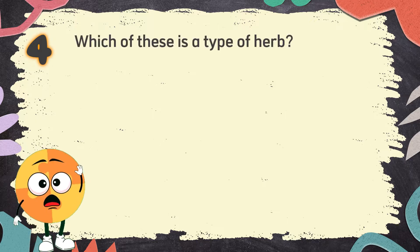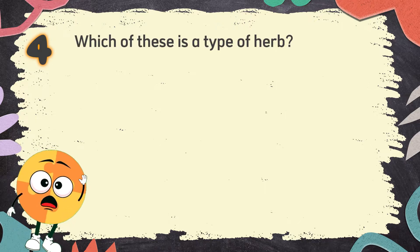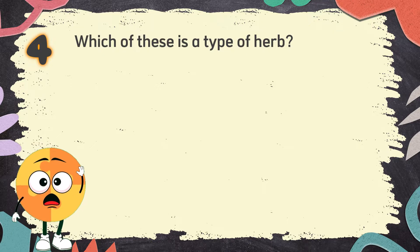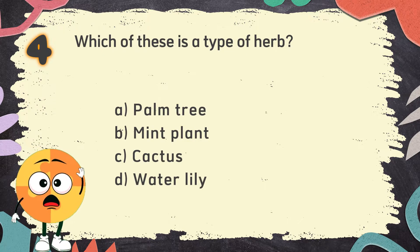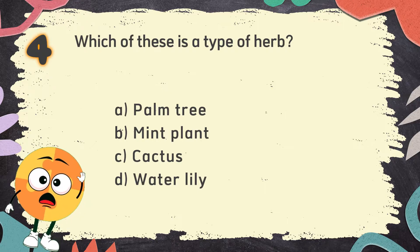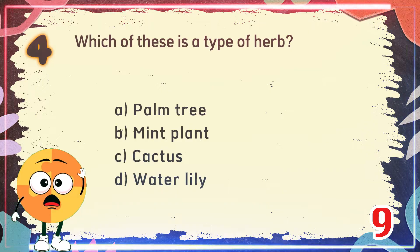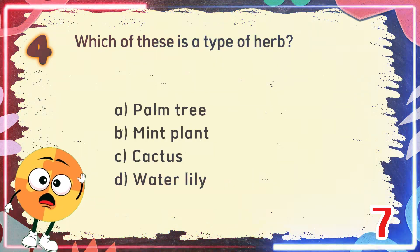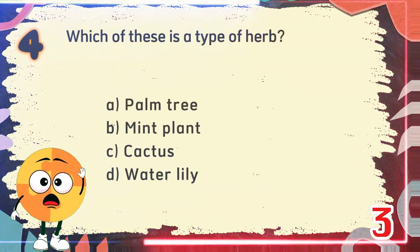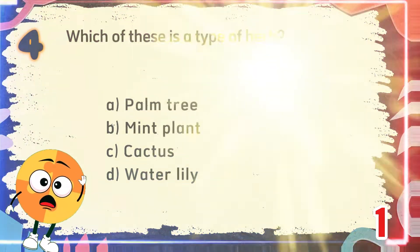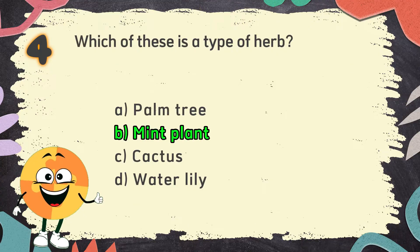Number 4: Which of these is a type of herb? The choices are: A. Palm tree, B. Mint plant, C. Cactus, D. Water lily. The correct answer is B. Mint plant.